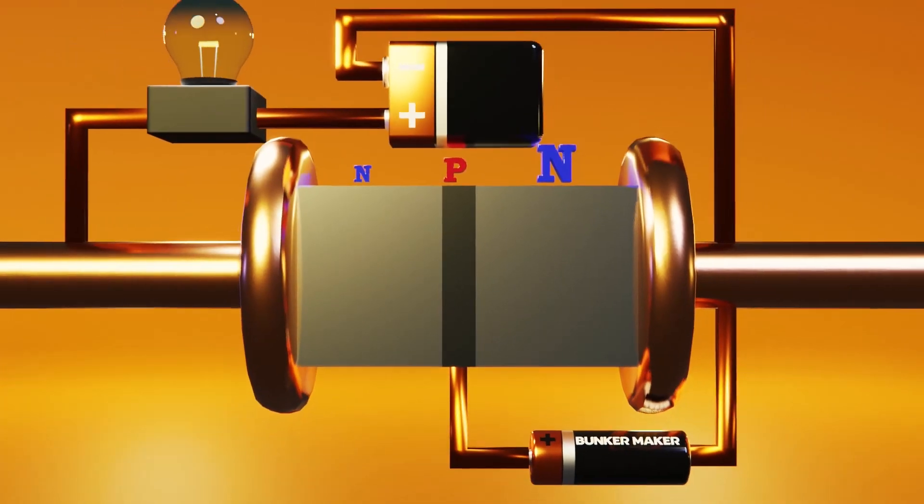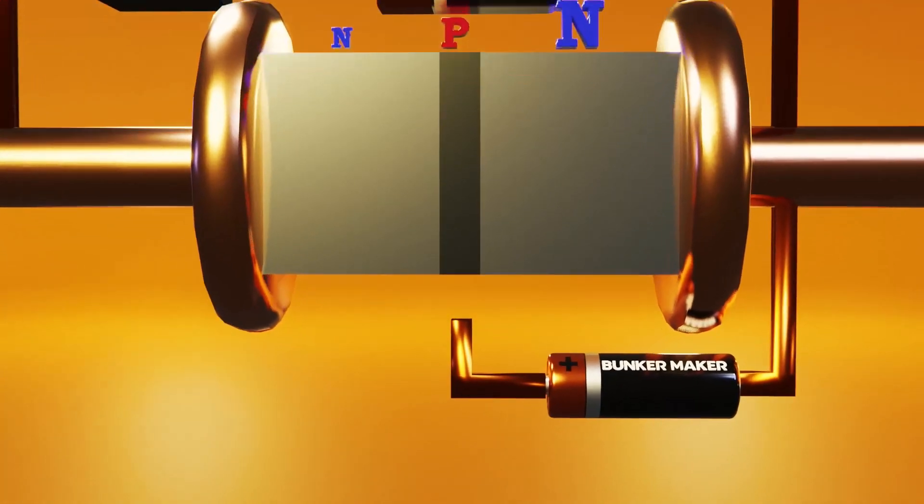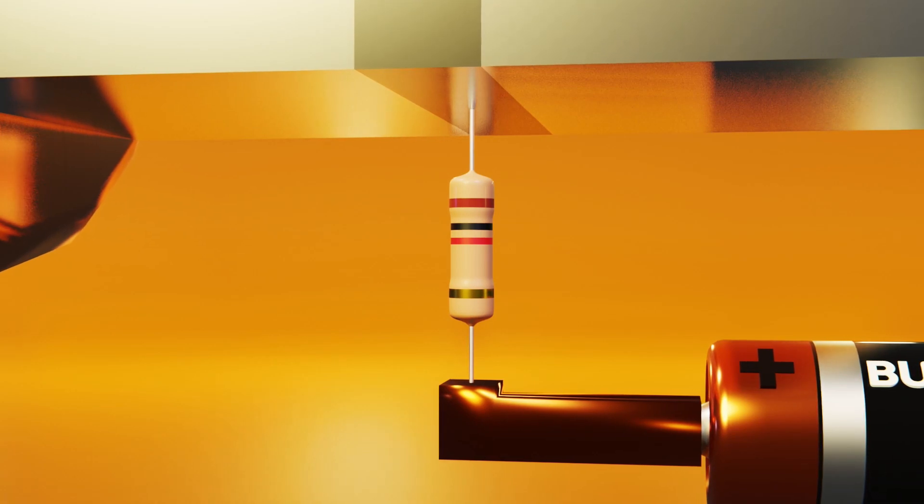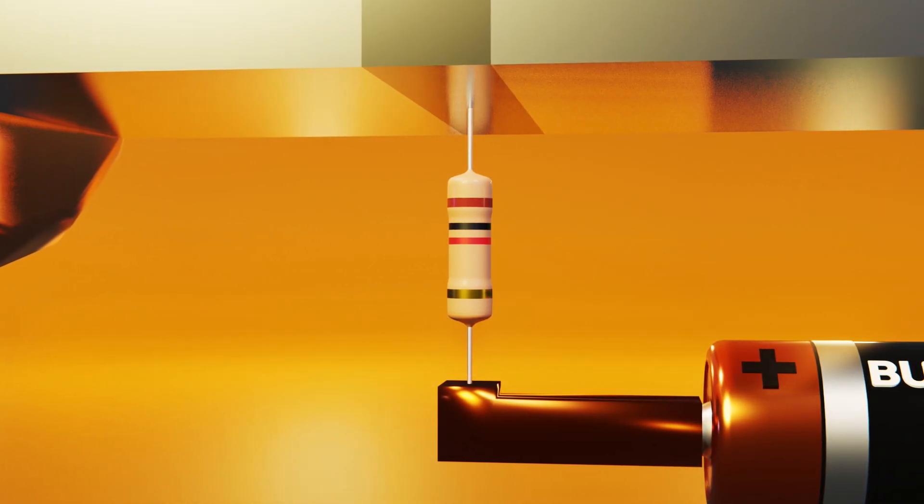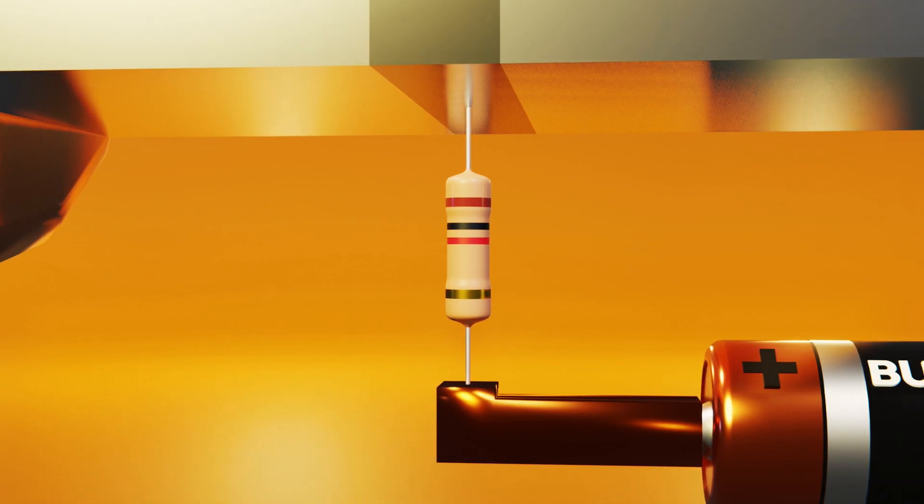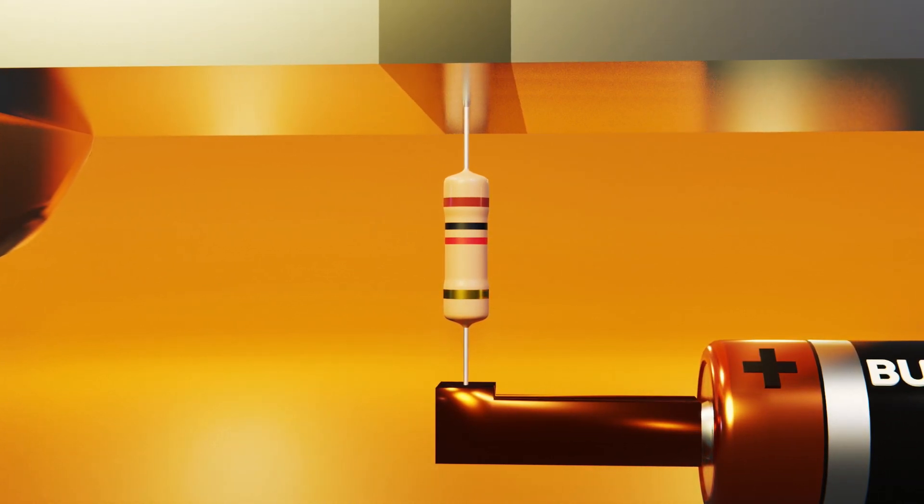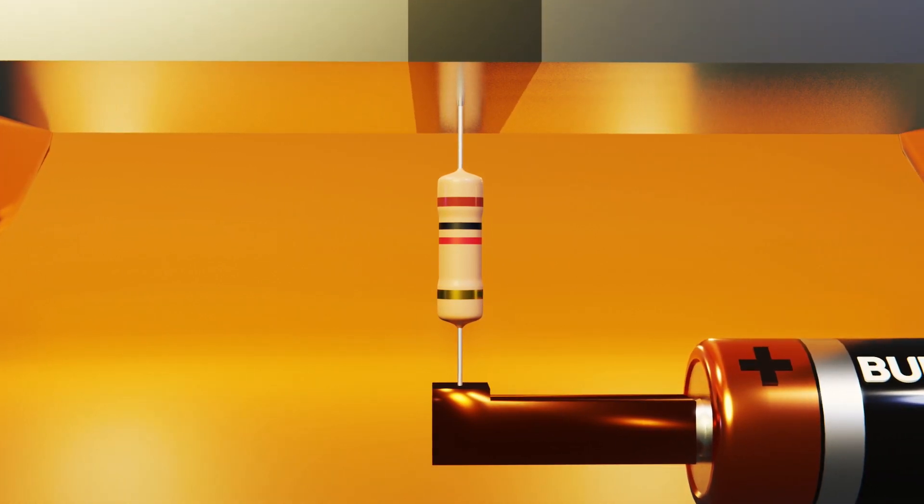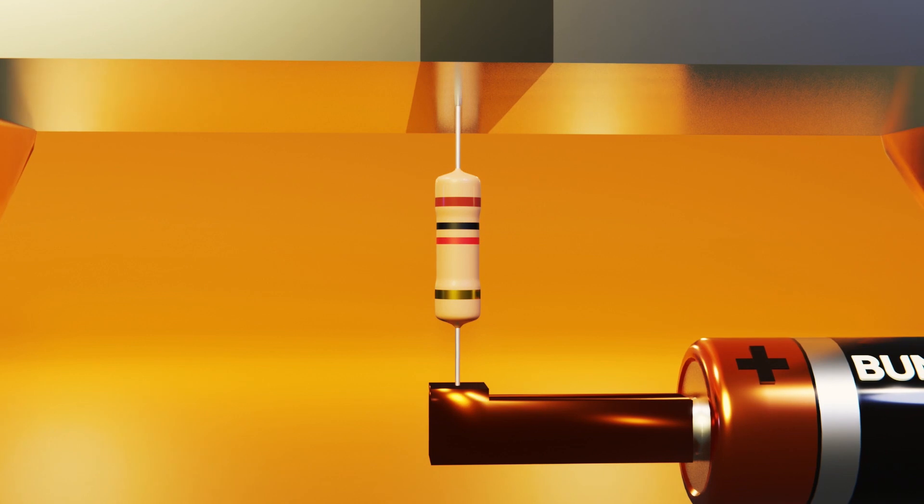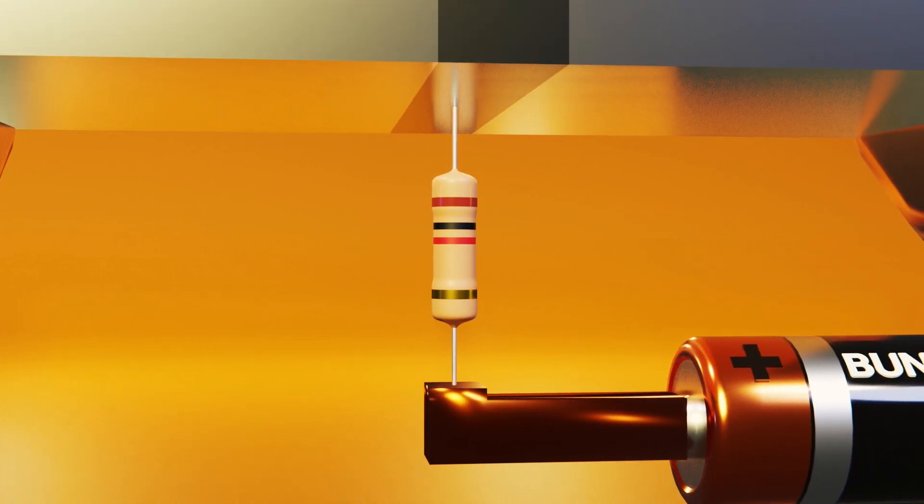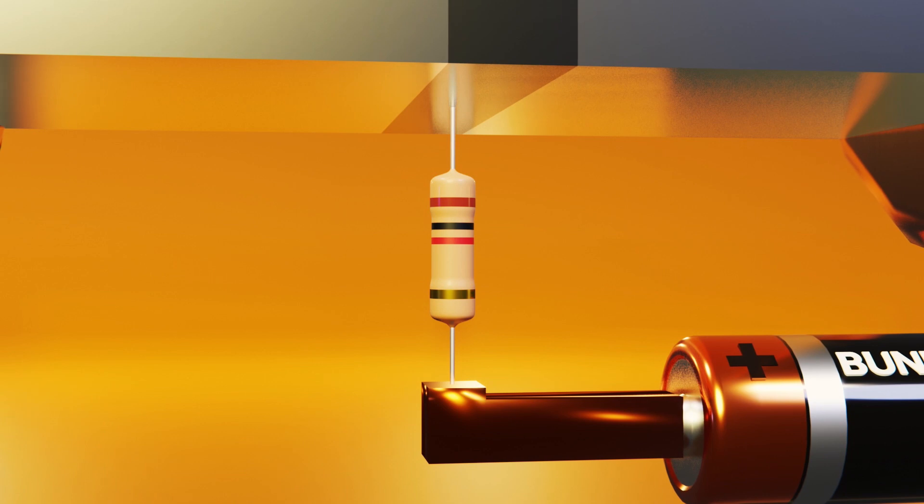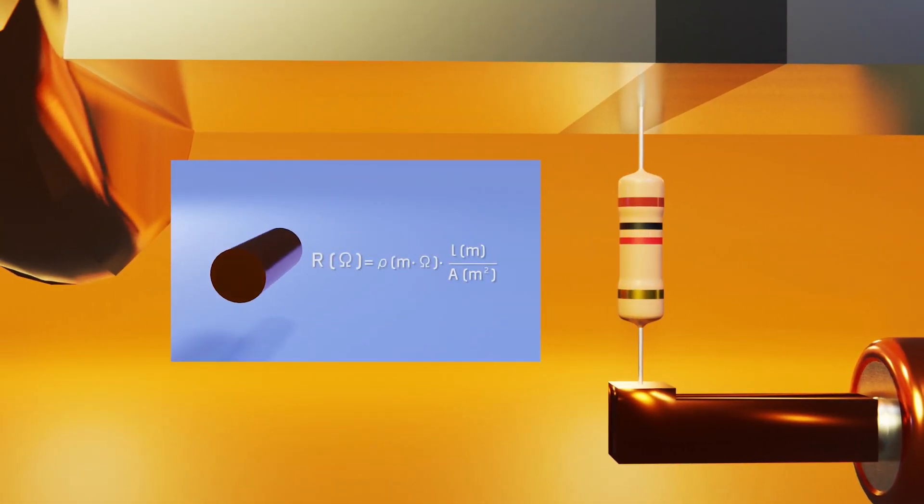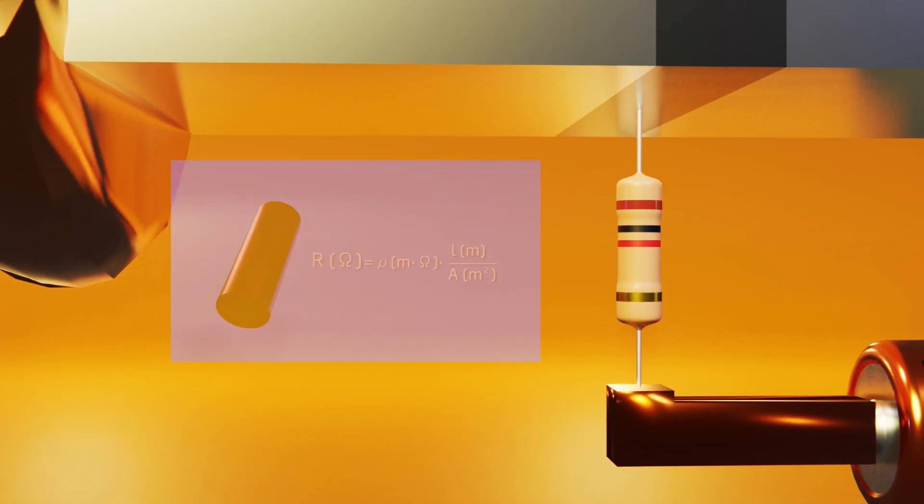Returning to the application of transistors, it's common to see that these are accompanied by a series resistance. The function of this resistance is to limit the voltage generated at the base. Remember we only need 0.7 volts to enter the active region, and increasing the voltage will also increase the current that will pass through the transistor. Depending on the transistor, if the current is very high it could burn it. The resistance must be high enough to limit the voltage and current that reaches the base, but at the same time not so high to prevent it from flowing completely. If this part was not very clear, remember that I have another video about resistances.